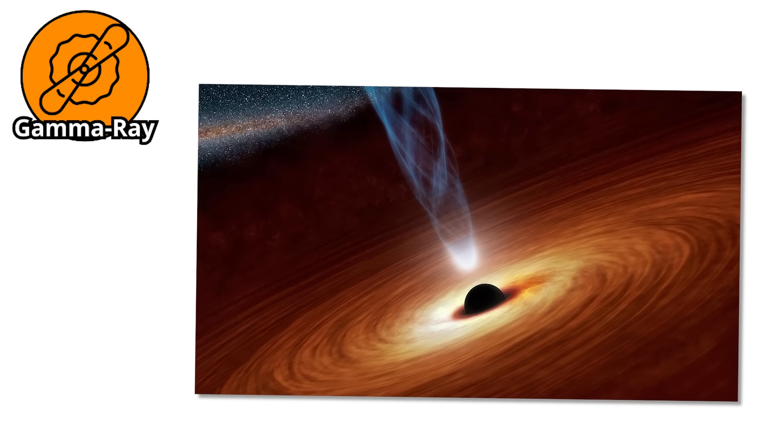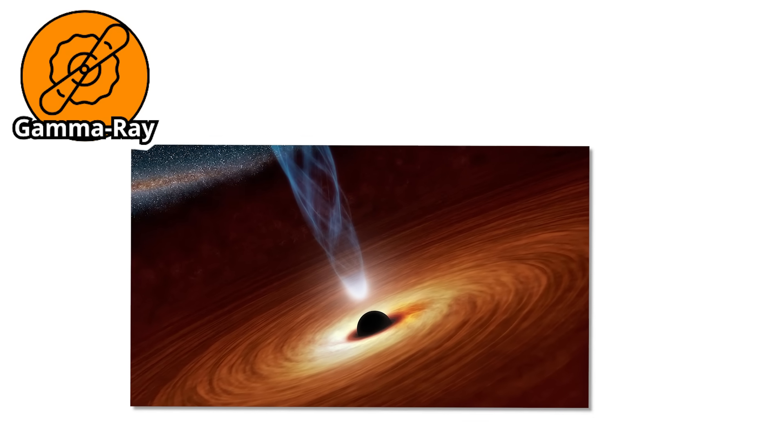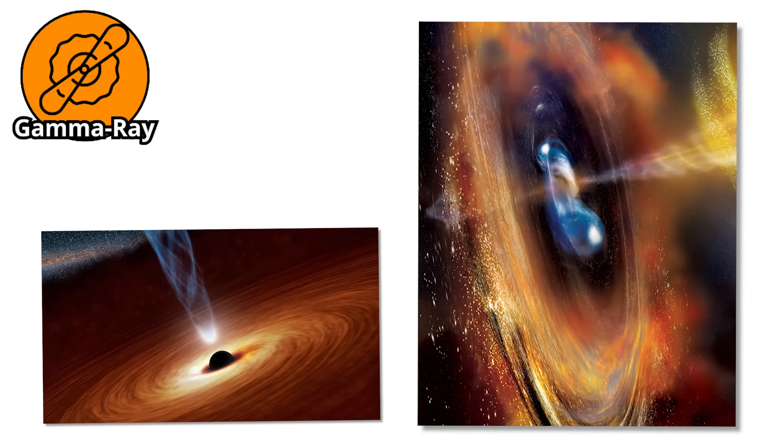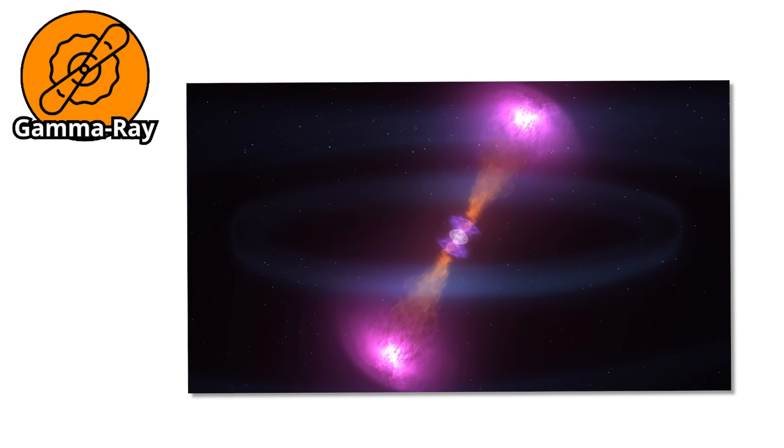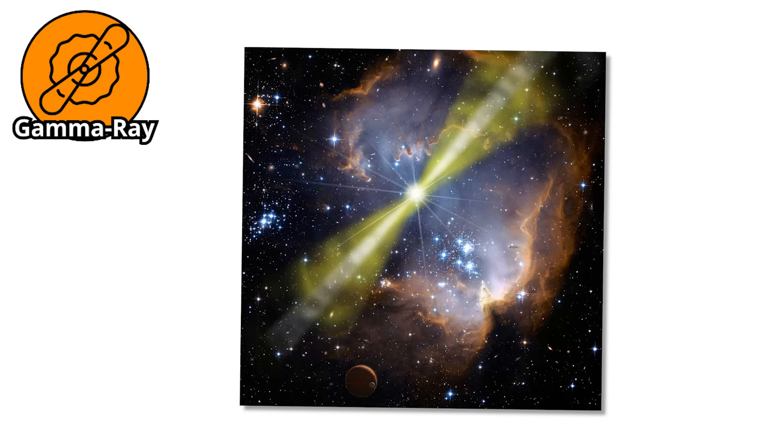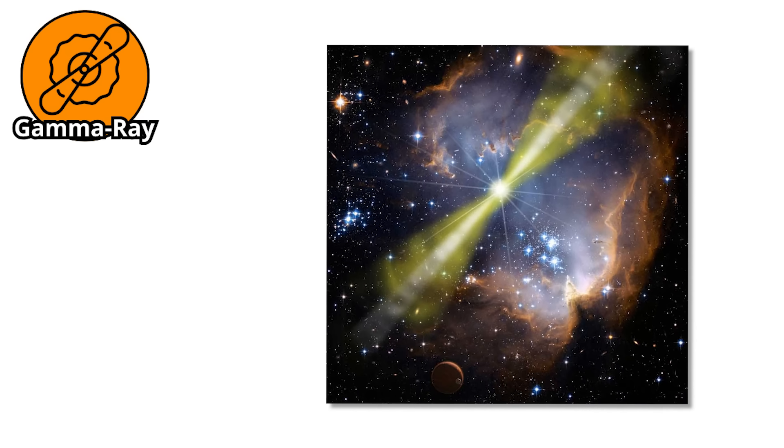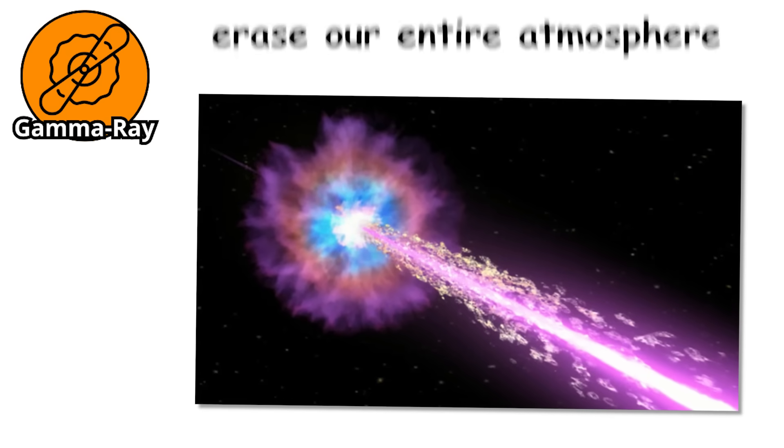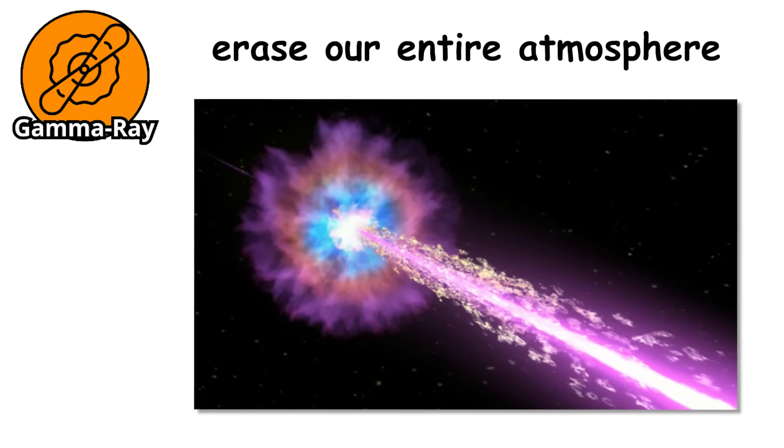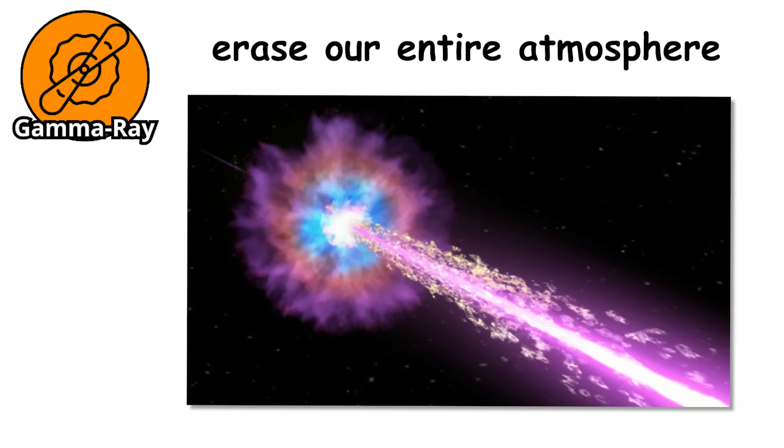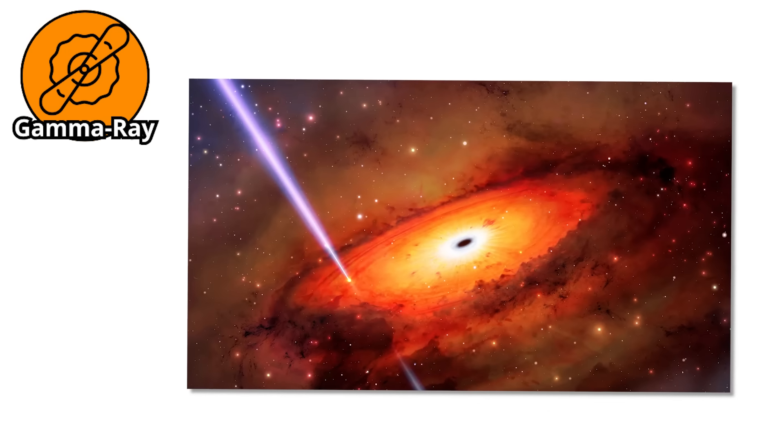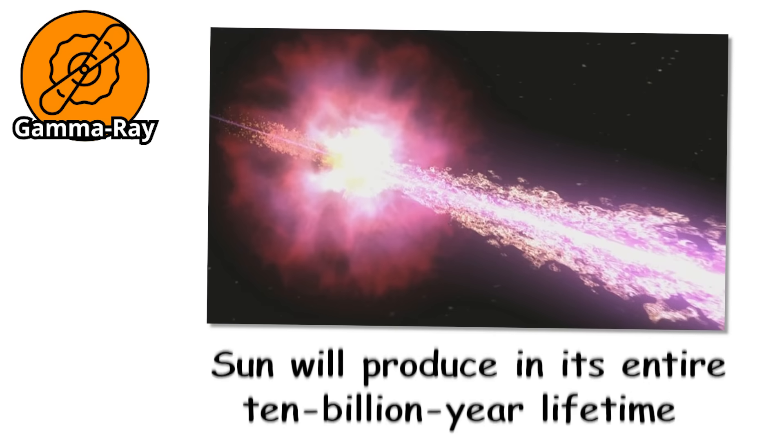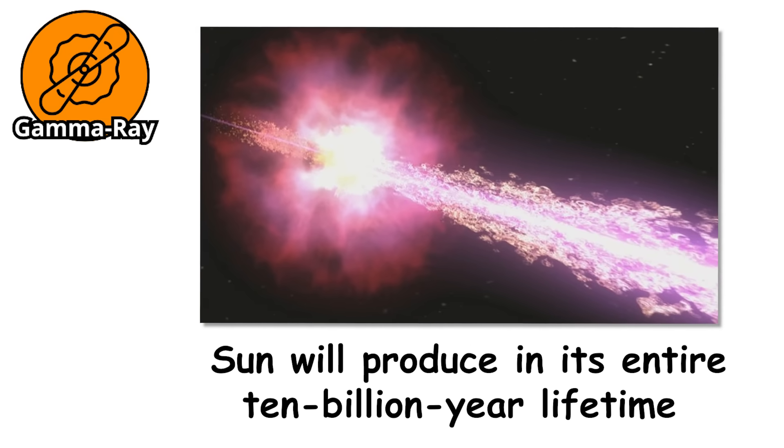They usually occur when a massive star collapses into a black hole, or when two neutron stars collide. These cosmic cataclysms send out narrow beams of gamma radiation so intense that if one were pointed directly at Earth from even thousands of light-years away, it could erase our entire atmosphere in seconds. We are talking about energy that outshines entire galaxies. For a brief moment, a single Gamma Ray Burst can release more energy than the Sun will produce in its entire 10 billion year lifetime.